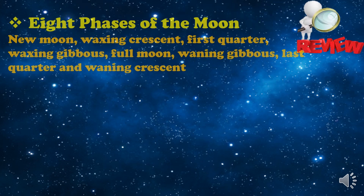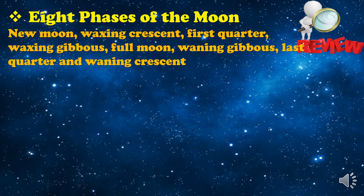Before we move on to our next lesson, let us review our past lesson. We had discussed the 8 phases of the moon: new moon, waxing crescent, first quarter, waxing gibbous, full moon, waning gibbous, last quarter, and waning crescent.